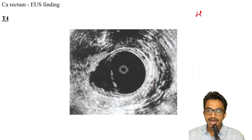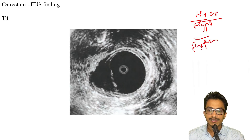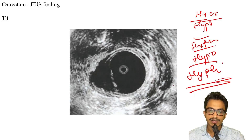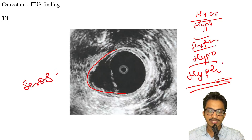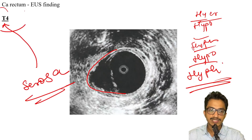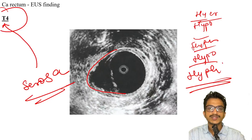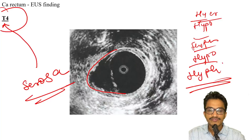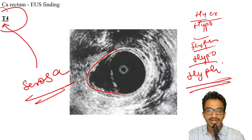If a US image is given showing hyper-hypo-hyper-hypo-hyper layers — the five layers seen on ultrasound — and the lesion is invading the fifth layer (the serosa), then it is pointing towards stage T4. This is a classic NEET SS-type question. Identify where invasion occurs in the five US layers and determine the T stage accordingly.